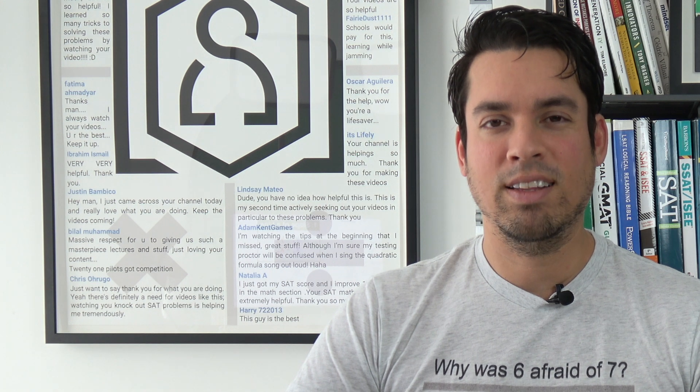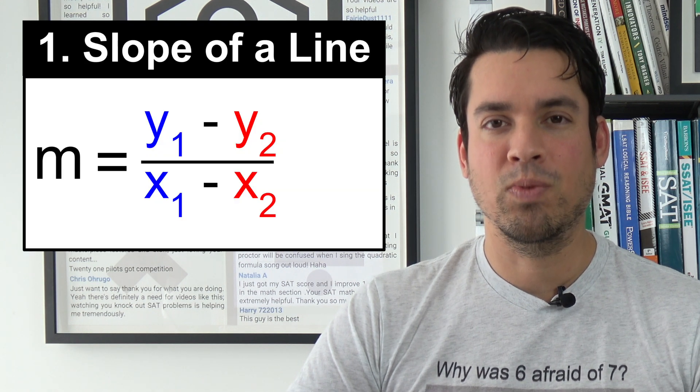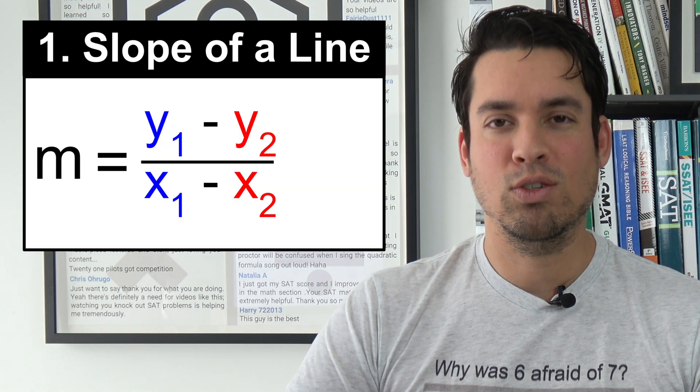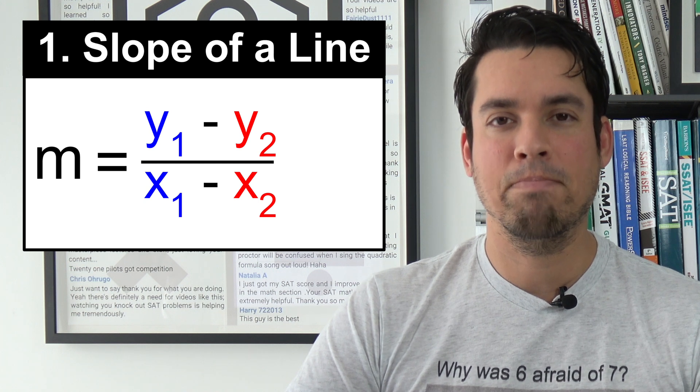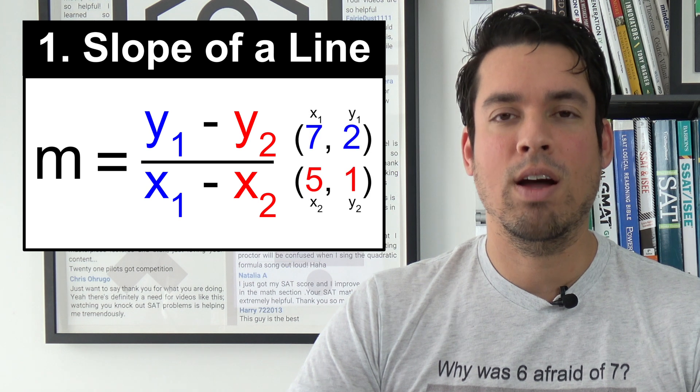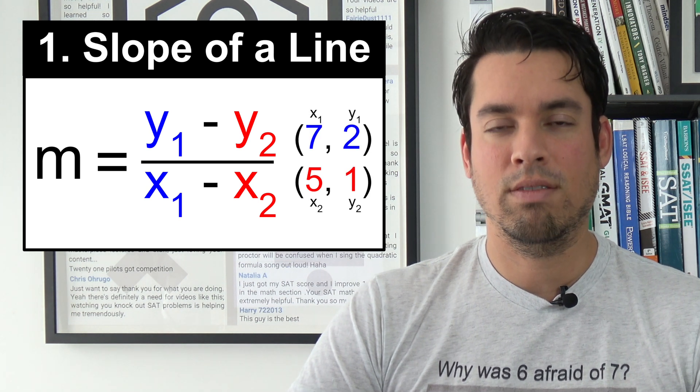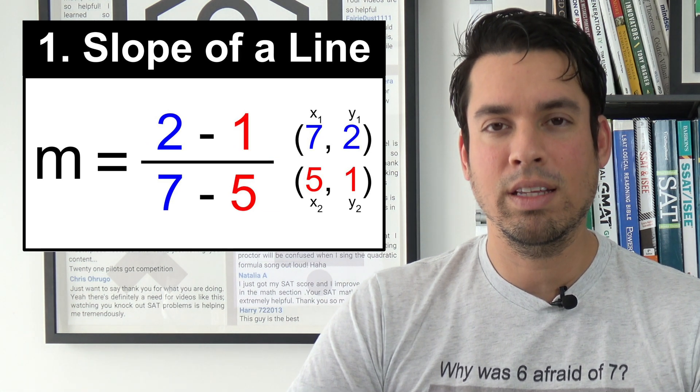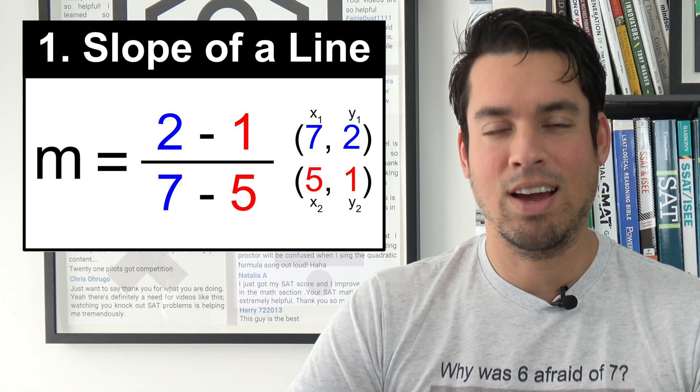The first formula on the list is slope of a line, which of course is y₁ minus y₂ over x₁ minus x₂. The y's and the x's represent x and y values of two coordinates of a line. All you gotta do is plug in those respective coordinates and calculate the slope.